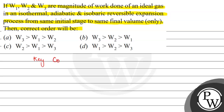Let's look at the key concept of this question. The given question is based on work done under the graph — work done under the PV graph. According to the given question, we have to determine the order for the isothermal, adiabatic and isobaric reversible expansion process.